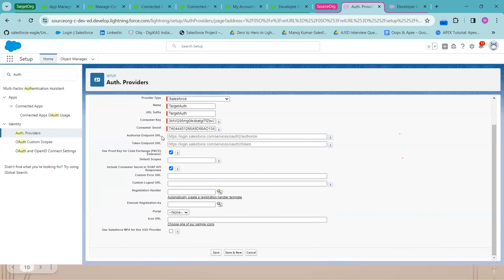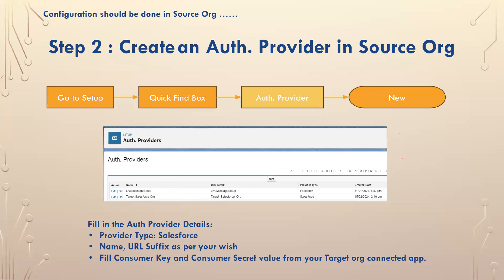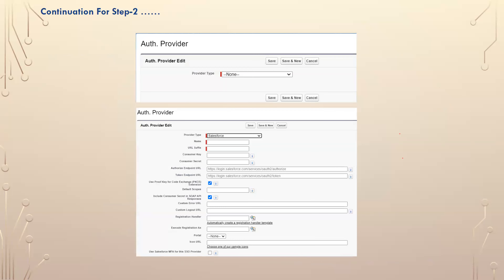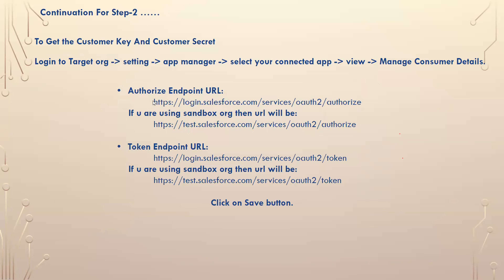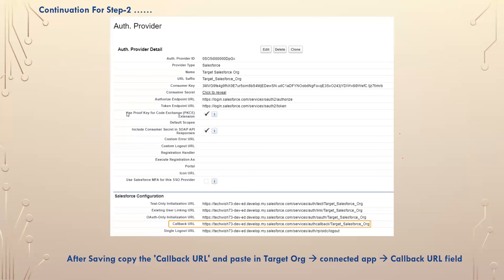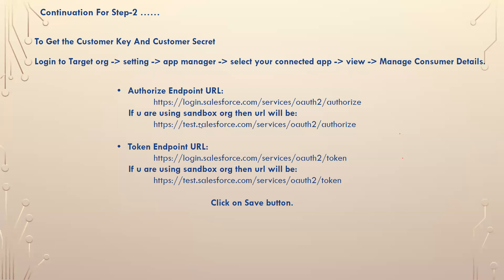It will ask for an authorize endpoint URL and a token endpoint URL. If you are using a Developer Edition, use the standard login URL. If you are using a Sandbox, use test.salesforce.com. The same applies for the token endpoint URL. We need to fill in both fields with their respective URLs.